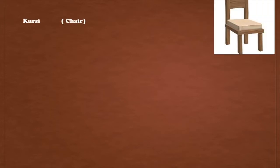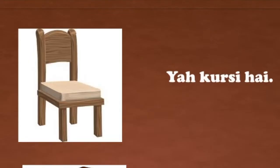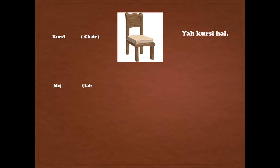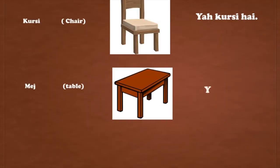Let's form sentences using these words. Kursi means chair: yaha kursi hai, meaning 'this is a chair.' Mej means table: yaha mej hai, meaning 'this is a table.'